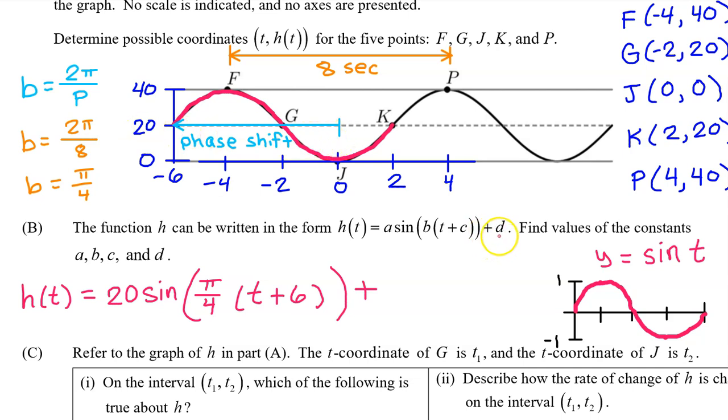In unit 1, we learned that the d value corresponds to a vertical translation. Notice that the parent function has a midline of y equals 0. Compare that to a midline of y equals 20 for h of t. That's a vertical translation by 20, therefore the d value is 20. For a sinusoidal function, the d value will simply be the midline.